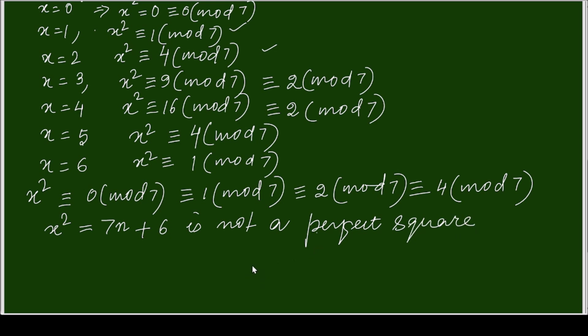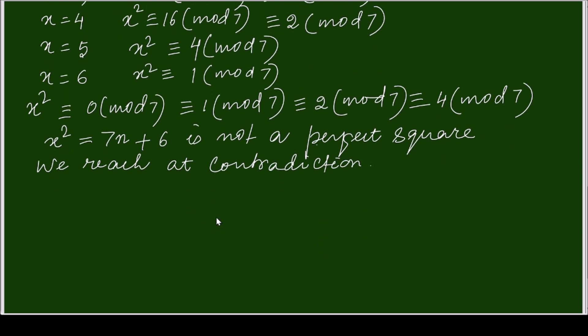That means x square equals to 7 times of an integer plus 6 is not a perfect square. So we reach at the contradiction. We reach at the contradiction means y is never equal to or greater than 7.